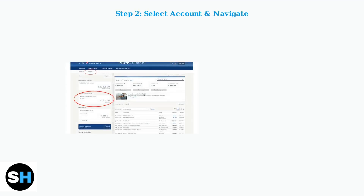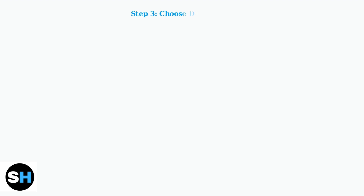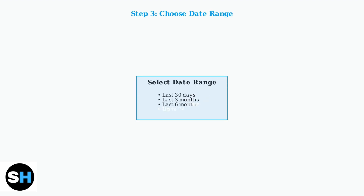Once logged in, select the account you want to download history for. Then navigate to either the Statements and Documents or Account Activity section. Select the date range for your transaction history. The Chase Mobile app typically allows you to access up to 24 months of historical data.